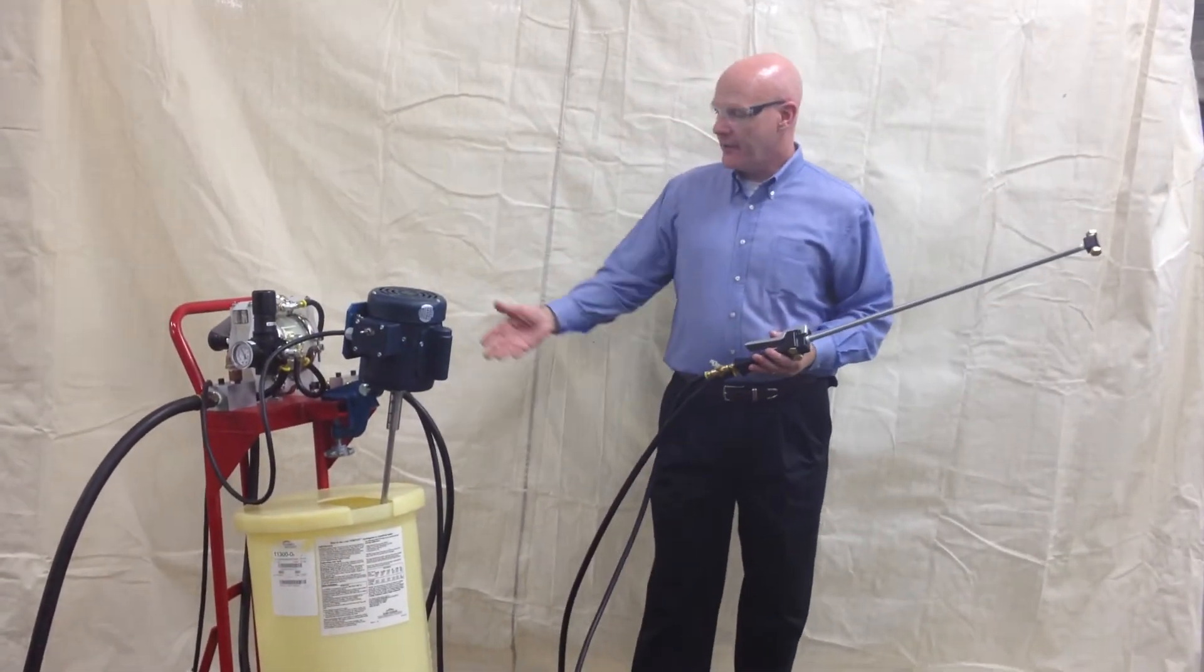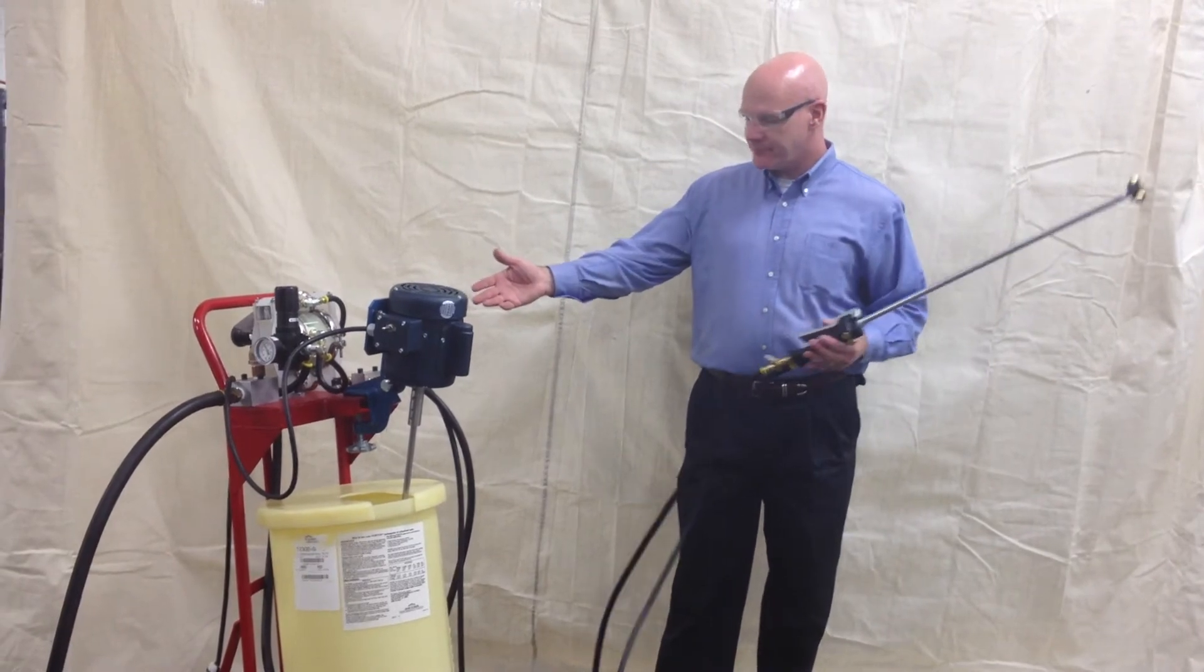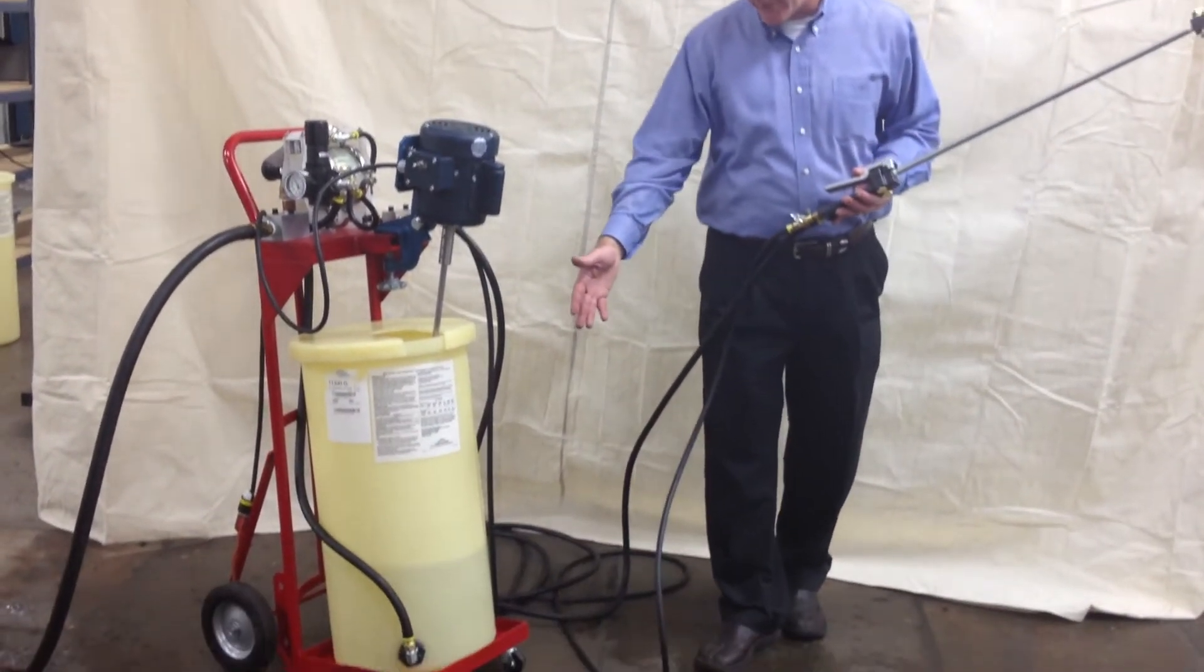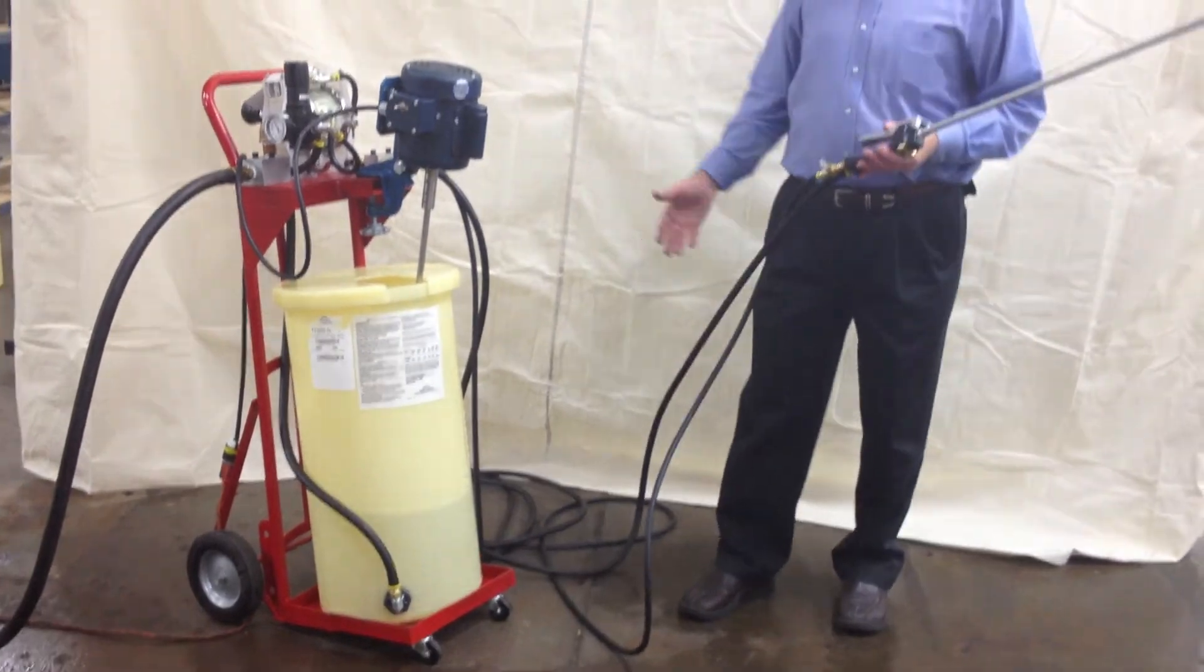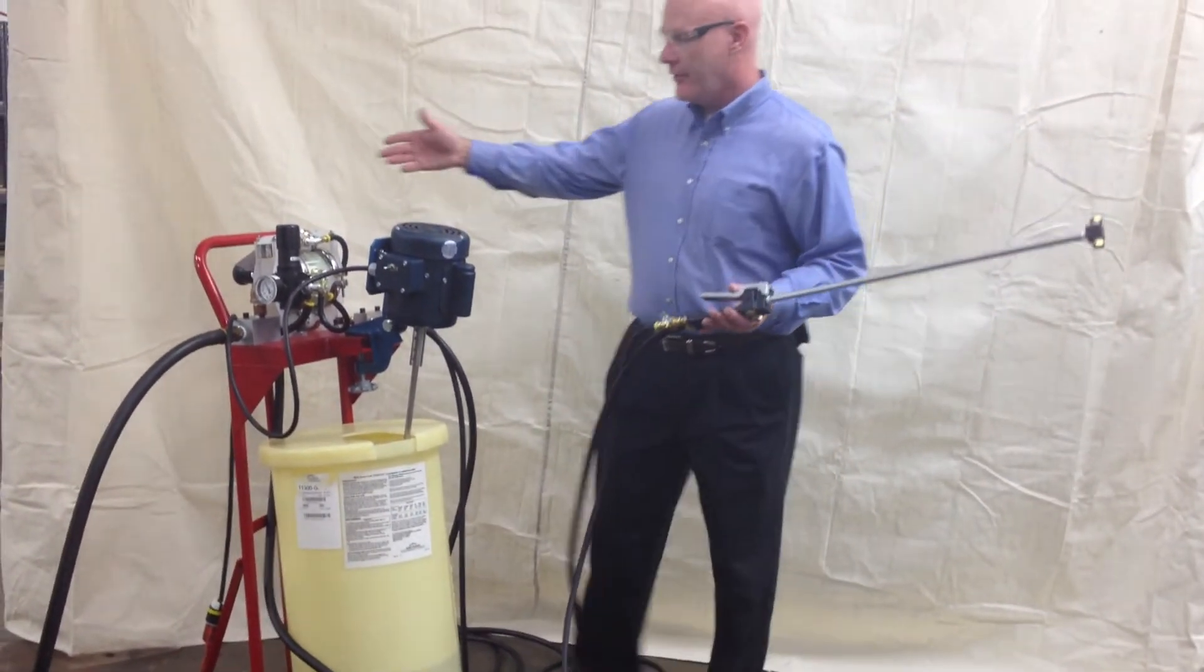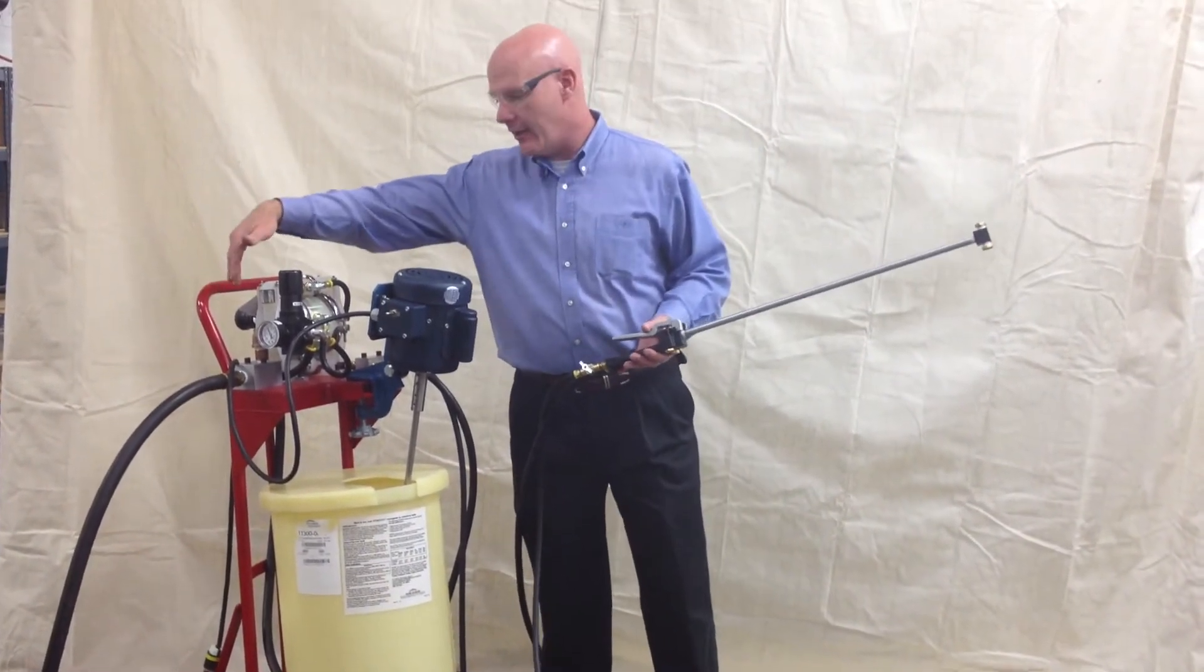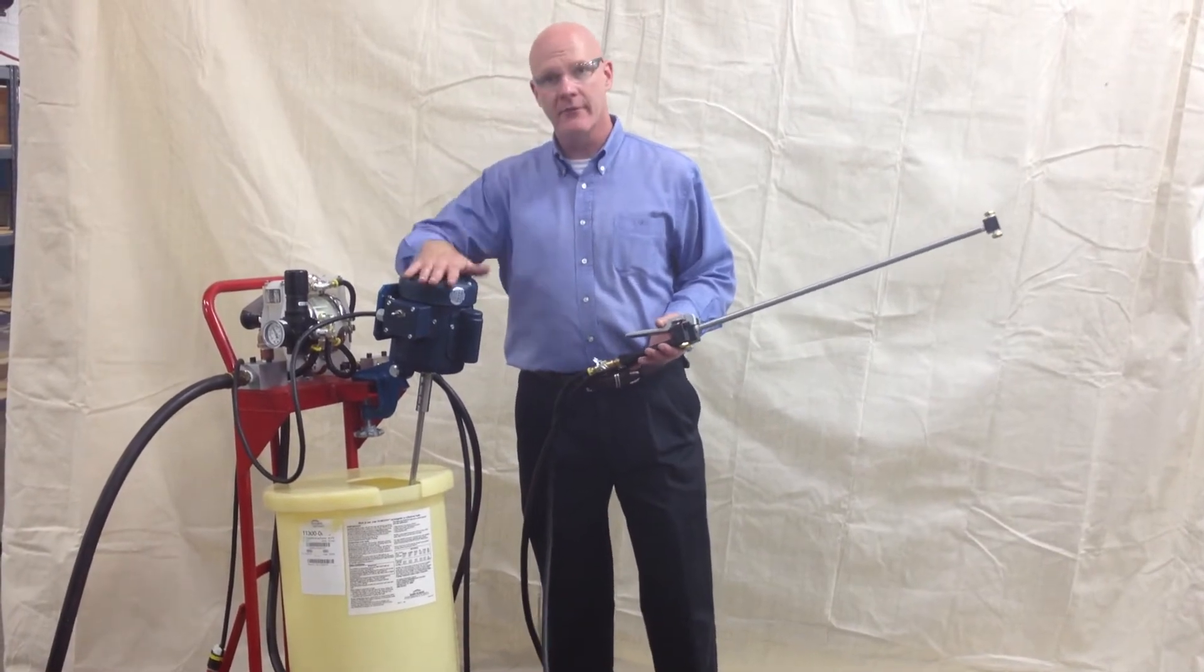The F200 is mounted on a convenient cart. The cart has two outboard casters, so it's very easy to maneuver through the plant. It's self-contained. All you need is a three-quarter inch airline and a 120-volt supply for the agitator motor.